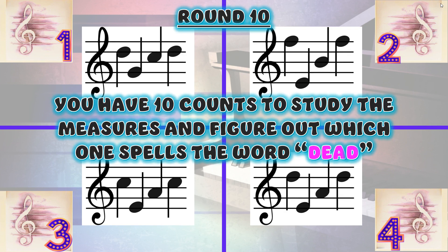Round 10. You have 10 counts to study the measures and figure out which one spells the word 'dead.'